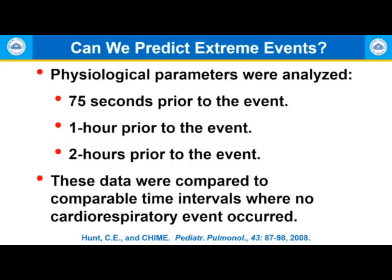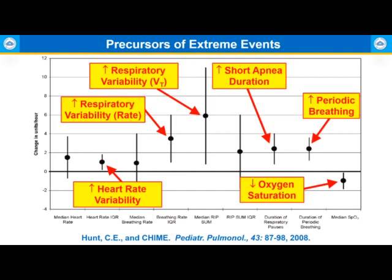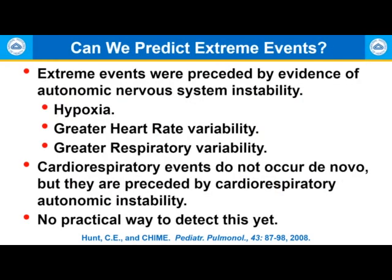Can we predict extreme events? Physiologic parameters were analyzed 75 seconds, one hour, and two hours prior to an event and compared to intervals with no cardiorespiratory events. Precursors of extreme events included: increased heart rate variability within two hours prior, increased respiratory rate variability, increased tidal volume variability, increased short apnea duration, decreased oxygen saturation, and increased periodic breathing. Extreme events were preceded by evidence of autonomic nervous system instability, hypoxia, greater heart rate variability, and greater respiratory variability. Unfortunately, there is no practical way to detect this as yet.